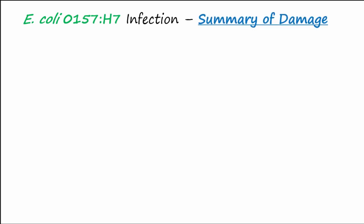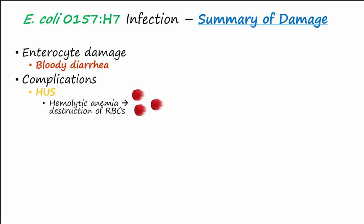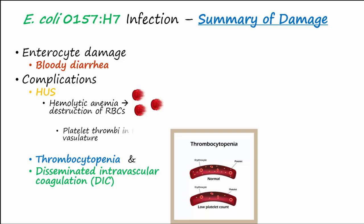Let's summarize the damage that O157:H7 can do. We mentioned damage to enterocytes and bloody diarrhea. The most significant damage, however, is often to the microvasculature of the kidney, leading to hemolytic uremic syndrome, or HUS. Hemolytic refers to the destruction of red blood cells. Shigatoxin can also activate platelets and bring about thrombocytopenia and activation of the clotting cascade to cause disseminated intravascular coagulation, or DIC. Platelets being activated makes them stick together to form platelet thrombi that get stuck in the renal microvasculature and cut off blood supply to the kidney, bringing about acute renal failure.